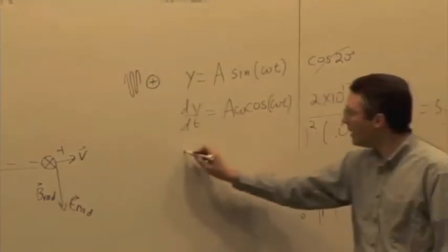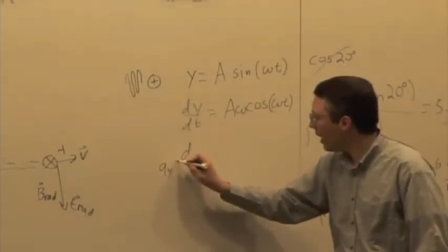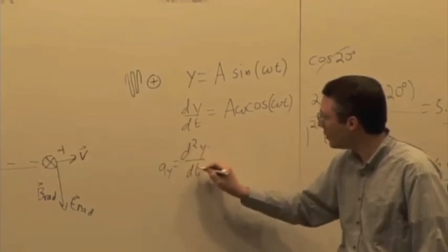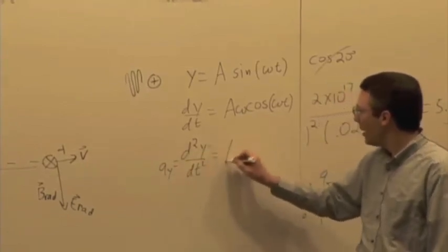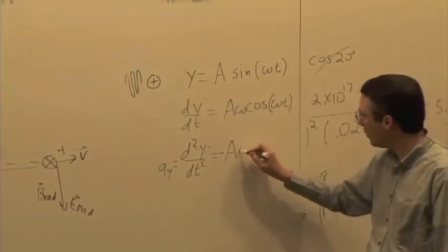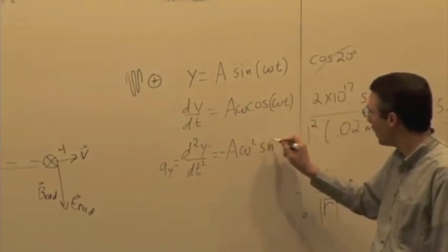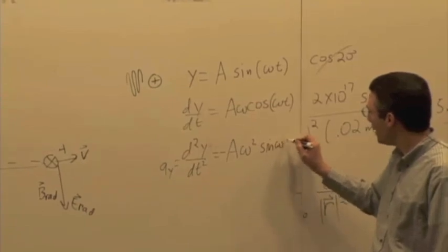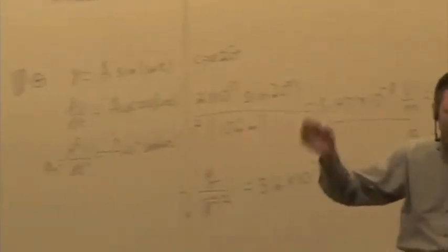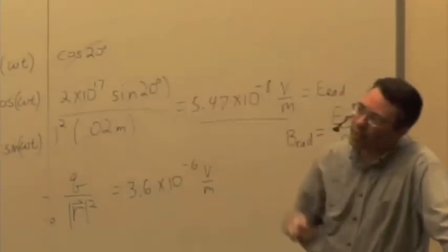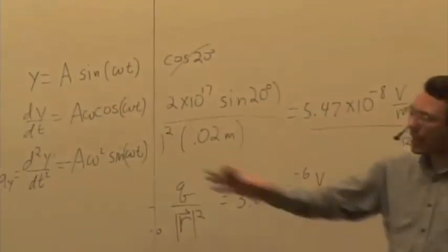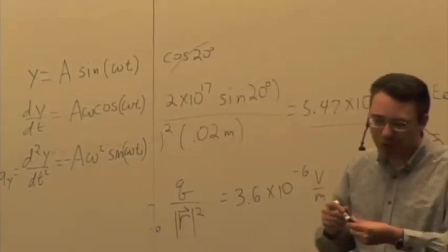And then you take the derivative again to get the acceleration. So a_y is d²y/dt². And so you get the amplitude, derivative of cosine is negative sine. We have -Aω² sin(ωt). So the acceleration function is going to have a sine in it, and therefore the radiation itself, based on the formula we just saw, is going to have a sinusoidal oscillation in it as well.